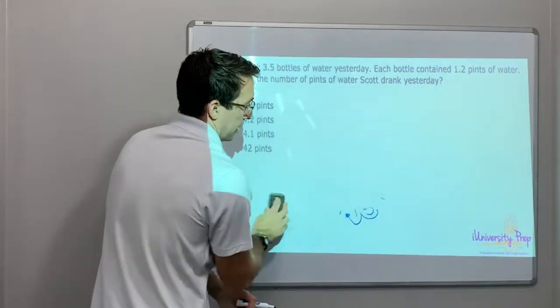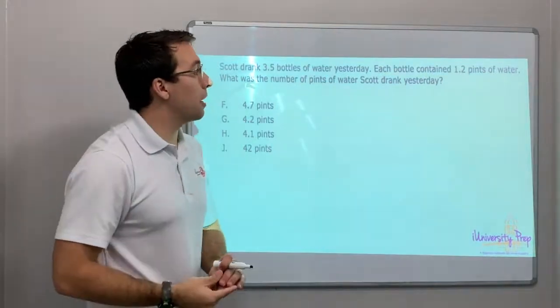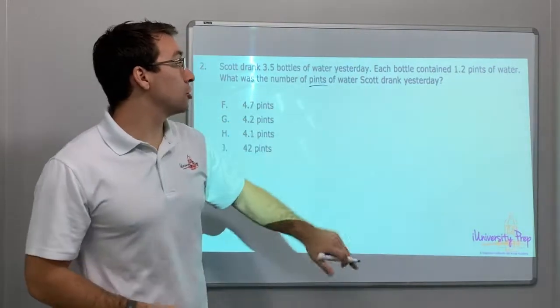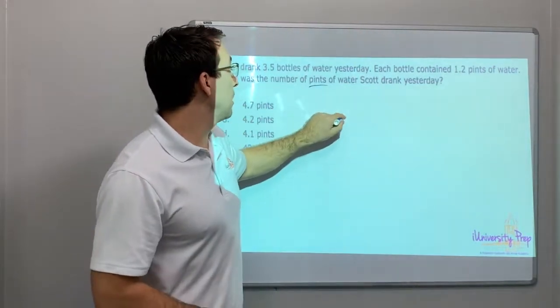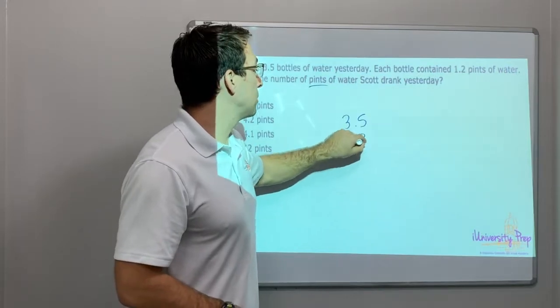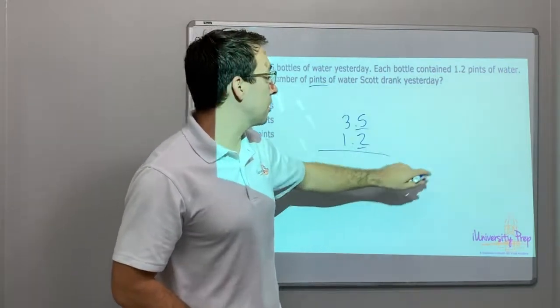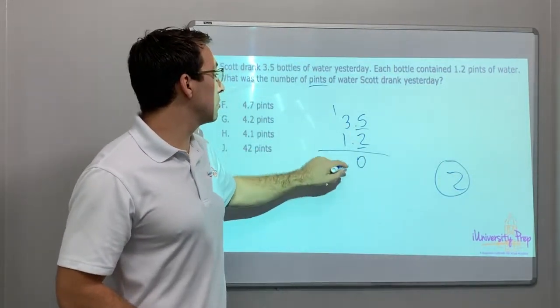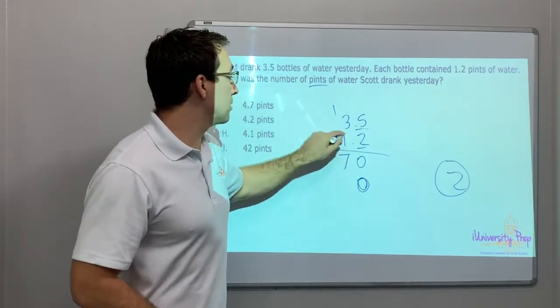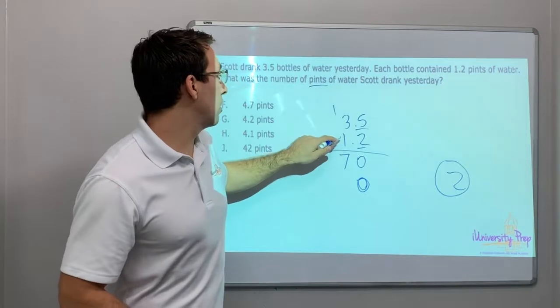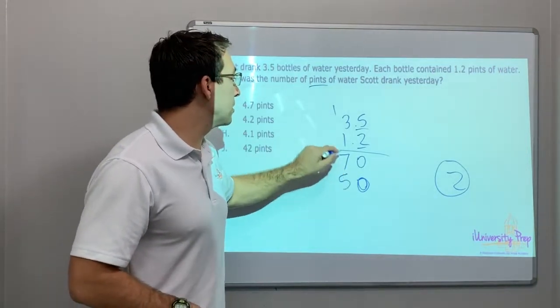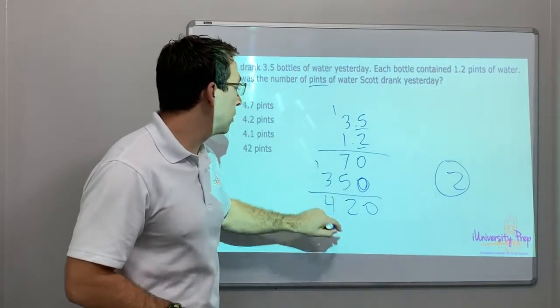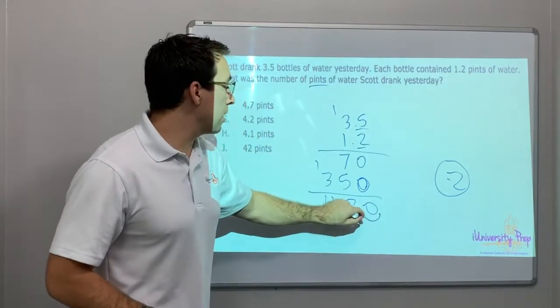Scott drank 3.5 bottles of water yesterday. Each bottle contained 1.2 pints of water. What is the number of pints Scott drank yesterday? 3.5 times 1.2. How many decimals? Two decimals in our answer. Two times five is ten, carry my one. Two times three is six, plus one is seven. Add a zero. One times five is five, one times three is three. Zero, seven plus five is twelve, carry my two, four.